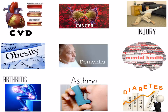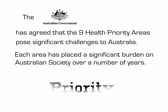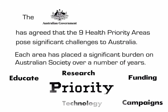The Australian government has chosen to use a framework of priority health issues to achieve this. Epidemiology plays an important role; however, issues such as social justice, potential for prevention, and costs are also important in identifying these priority issues. The nine health priority areas pose significant challenges and have placed a significant burden on Australian society. The government prioritises by educating, conducting further research, allocating funding, delivering campaigns, developing new technology, and attempting to empower the community to take control of their own health.